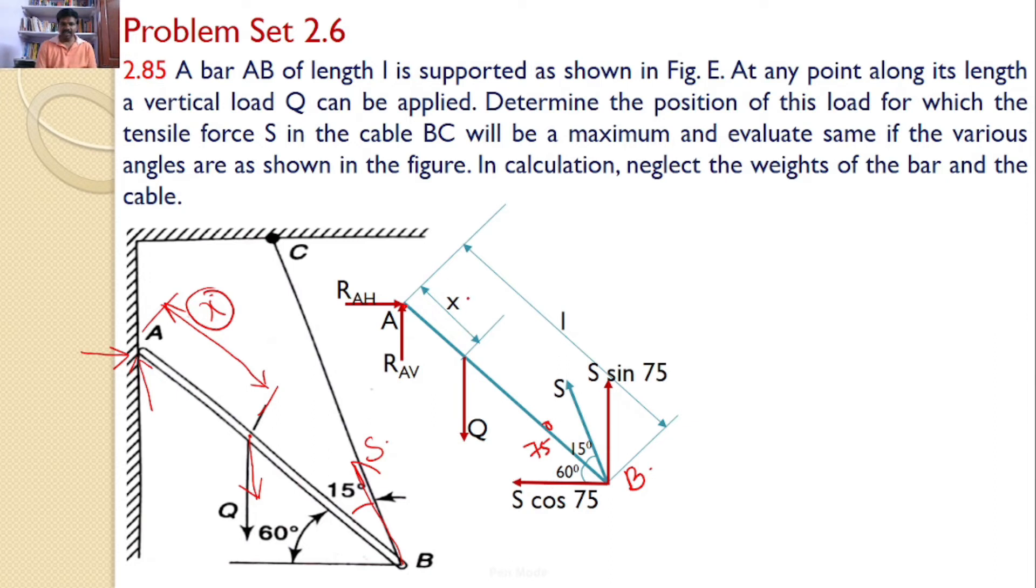Next we require the distance. So this is the line of action of Q and I want this distance. Now this AB makes an angle 60 with the horizontal. Hence this angle is 60 and this distance is x. So I can find this distance that is x into cos 60. Similarly S cos 75 into this distance I want. This distance the total length is L and this angle is given as 60. So this is opposite side you can say it is L into sin 60. Similarly this is the line of action for S sin 75 and this distance and this distance the total distance is L into cos 60.